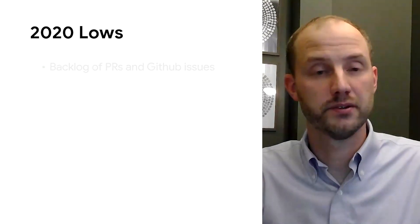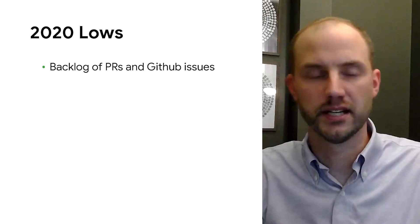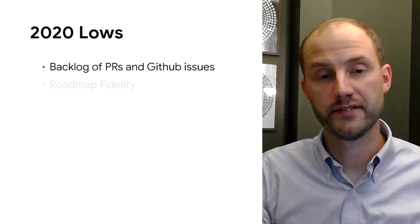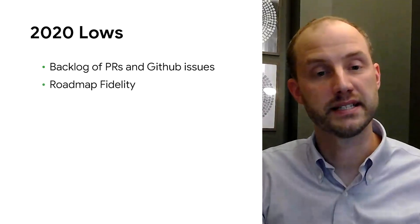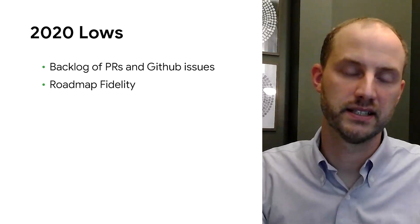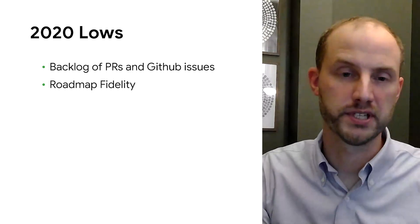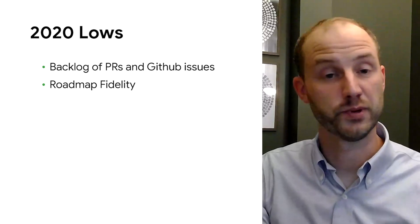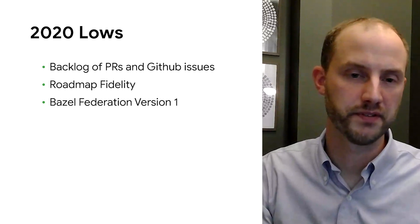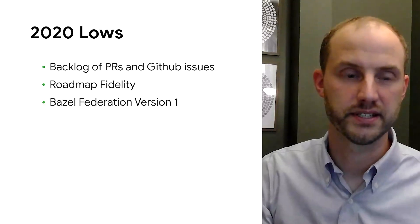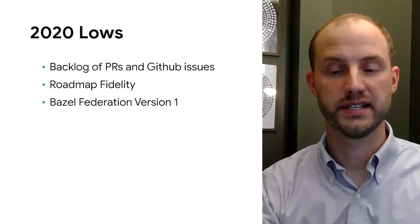We also have to acknowledge that there are some things that we didn't do as well as we would have liked. As the project has grown and more and more users use it, we've accumulated a backlog of pull requests and GitHub issues, and this is something that we really want to do a better job in addressing next year. Similarly, we have to acknowledge that our roadmap has not been as up-to-date and real as we would have liked, so it's been harder for our external community to know where Bazel is headed, and we're really doubling down on this for next year as well. And finally, though we were very aspirational in terms of the Bazel Federation, this also didn't go as well as we would have liked, and we're going to reboot this going into next year. There'll be more information shared about this during the conference.